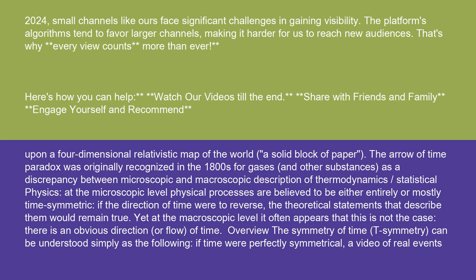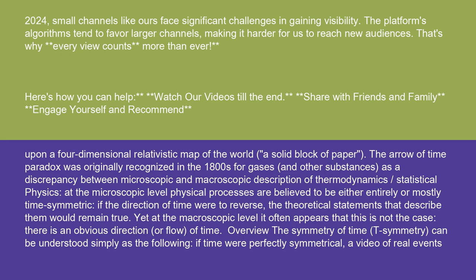An overview of the symmetry of time, or t-symmetry, can be understood simply as follows: if time were perfectly symmetrical, a video of real events would seem realistic whether played forwards or backwards. Gravity, for example, is a time-reversible force. A ball that is tossed up, slows to a stop, and falls is a case where recordings would look equally realistic forwards and backwards.